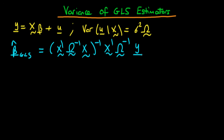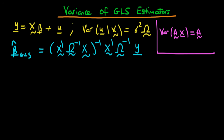We know that in the presence of heteroskedasticity, the GLS estimator is actually BLUE. In this video I want to derive the variance of this estimator. To do this, we'll use the familiar result that the variance of a constant matrix A times a random vector x is equal to A times the variance of x times A transposed.